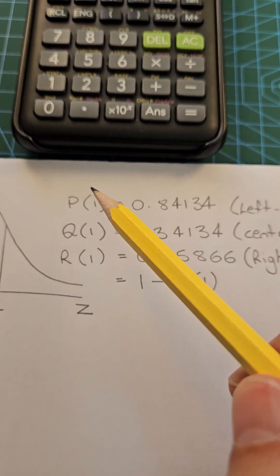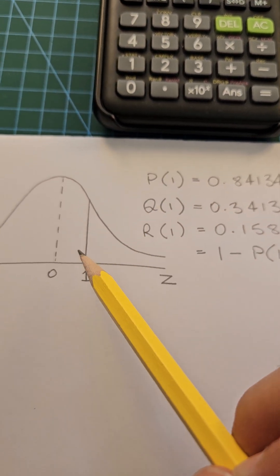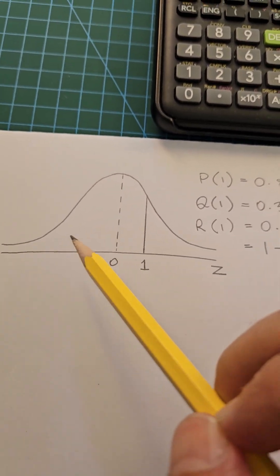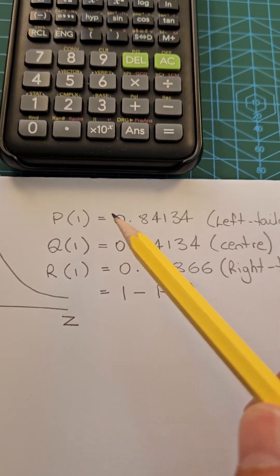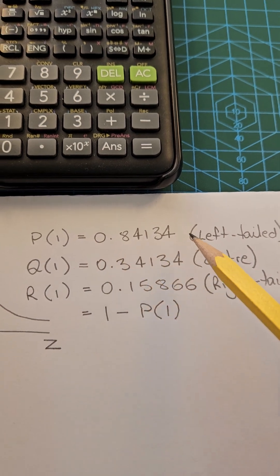Here are three examples. P of one gives you the probability to the left of z equals one, so that's all this area here, and p of one is 0.84134.